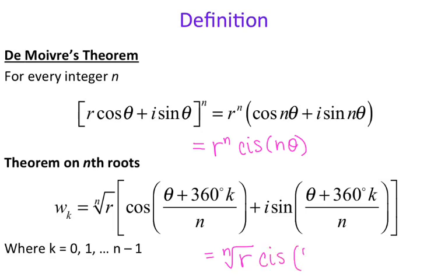The Theorem on nth roots is an expansion of De Moivre's Theorem, and it allows us to calculate all of the roots of a particular number. De Moivre's Theorem lets us raise a complex number to a power, while the Theorem on nth roots lets us take the square root, cube root, fourth root, or whatever root we want.